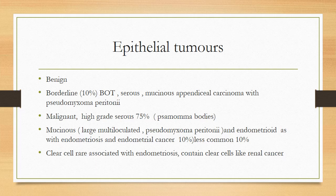Mucinous tumors are large, multiloculated tumors and might be associated with pseudomyxoma peritonii. Endometrioid tumors are associated with endometriosis and can have co-existing endometrial cancers in 10% of cases. Clear cell tumors are rare, also associated with endometriosis, and contain clear cells resembling renal cells. So epithelial tumors can take any variety of cell lines: serous, mucinous, endometrioid, and clear cell.